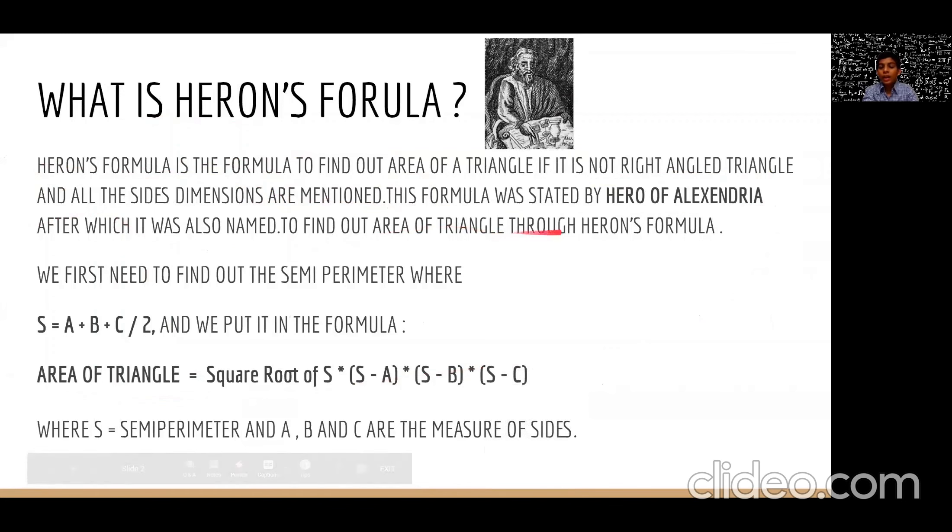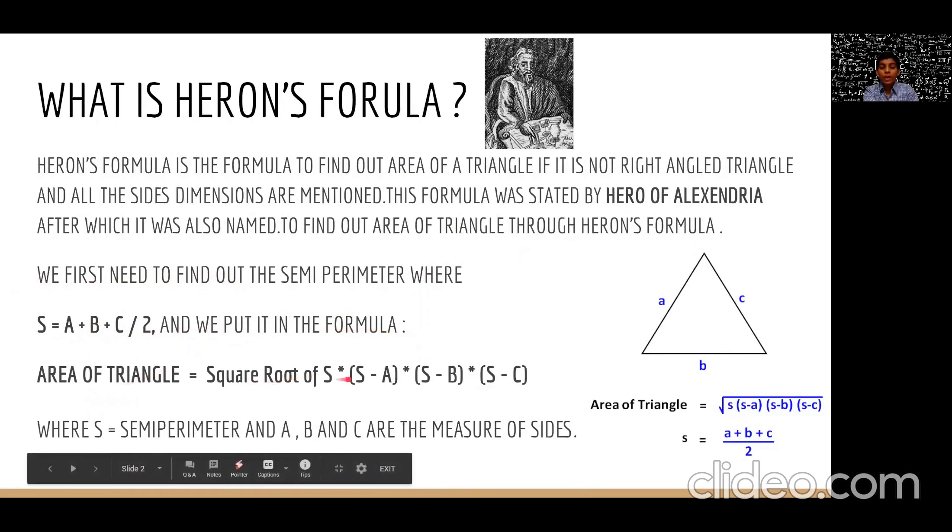To find out the area of the triangle through Heron's formula, we first need to find out the semi-perimeter where s equals a plus b plus c divided by 2, and we put it in the formula. Area of the triangle equals square root of s into s minus a into s minus b into s minus c, where s is the semi-perimeter and a, b, c are the measure of the sides.